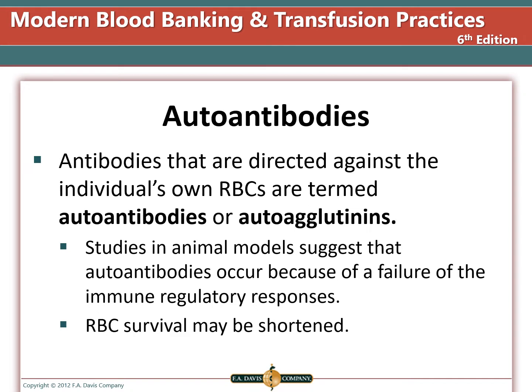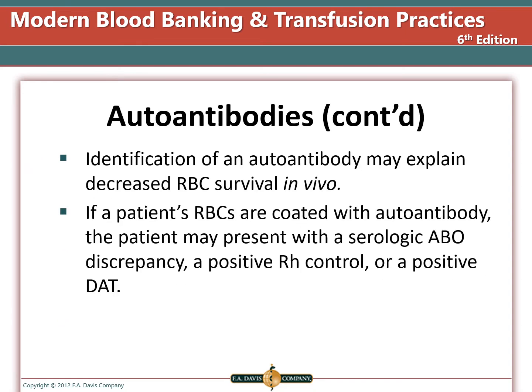An autoantibody is an antibody directed against an individual's own red blood cells. These autoantibodies are autoagglutinins. Studies in animal models suggest that autoantibodies occur because of a failure of the immune regulatory response, causing a shortened survival of red blood cells. Remember that the immune system is designed to detect and make antibodies against foreign and not self-antigens. If a patient has decreased in vivo red blood cell survival, identification of an autoantibody may explain why this is happening.